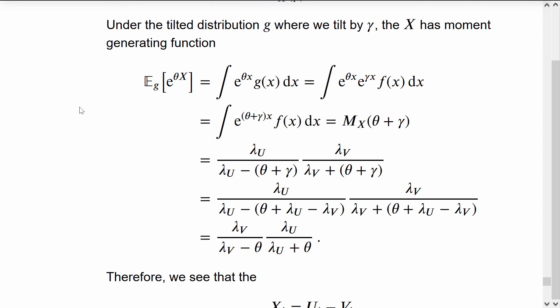We start with the definition of G's moment generating function, substitute in the fact that G is the exponentially tilted form of F, combine the exponential terms, and we get that the moment generating function of X under G is the moment generating function of F of X under F, which has just been shifted by a plus gamma.